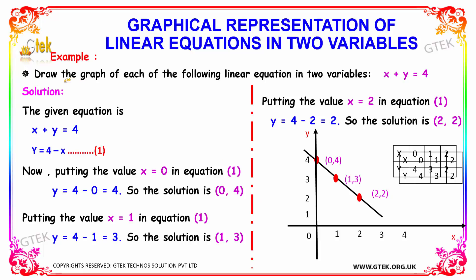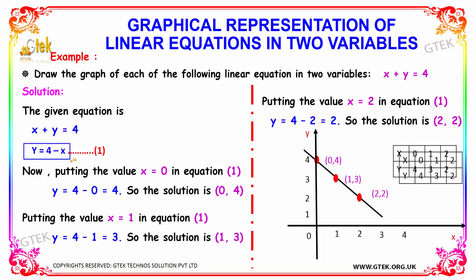Here we have an example. We need to draw the graph of the following linear equation in two variables. The equation is x plus y equal to 4. As per the given equation we need to frame the solution. The first step is taking x to the other side and keeping y on the left-hand side. When x moves to the right side it becomes minus x, so the equation becomes y equal to 4 minus x.